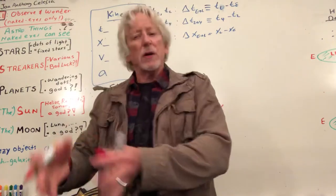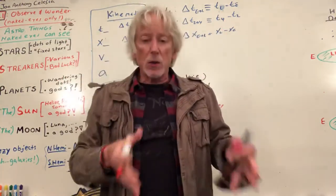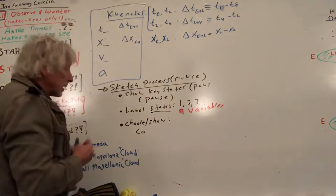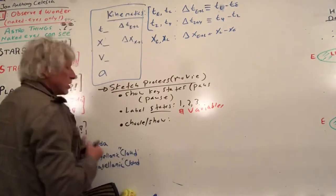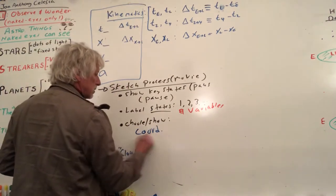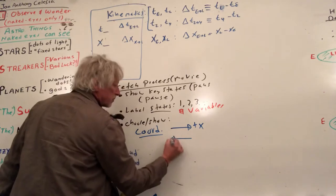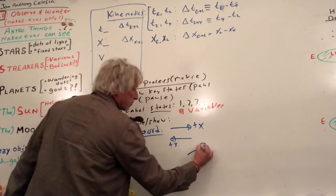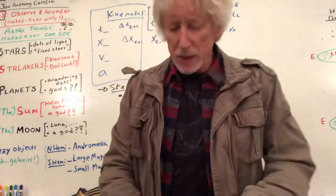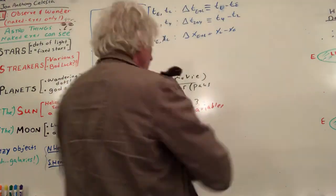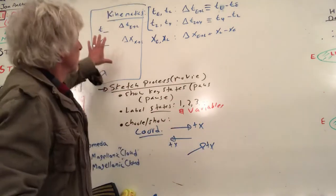If your algebra is weak you'll work it up, but getting it down into the equation is the hard part — you can get it though. The last key is to choose and show coordinates. For example, I can choose this to be the plus-x direction. It's really critical. We get kind of trained that x is always to our right, but positive doesn't have to be to the right; it can be to the left.